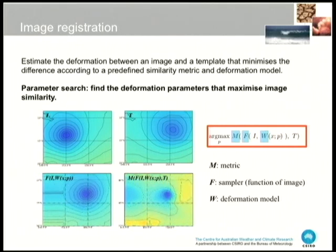The crux of the problem is to estimate deformation parameters that map one field to another field. Those parameters come from a model. You might say you want a shifting model that gives you displacement in X and Y, or give me the amount of rotation, translation, scale, and skew — that forms a six-parameter affine model. You can take it further and have non-linear models. But it really boils down to parameter search — a non-linear optimisation problem where you're finding the parameters that maximise the similarity between two images.